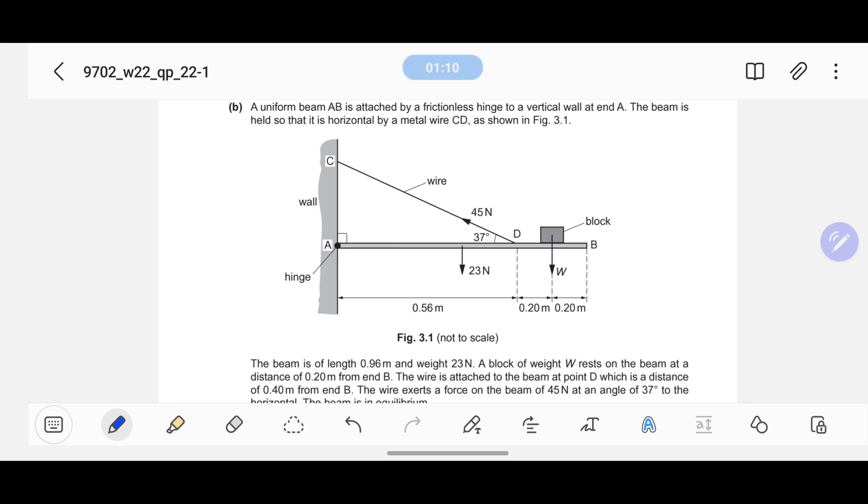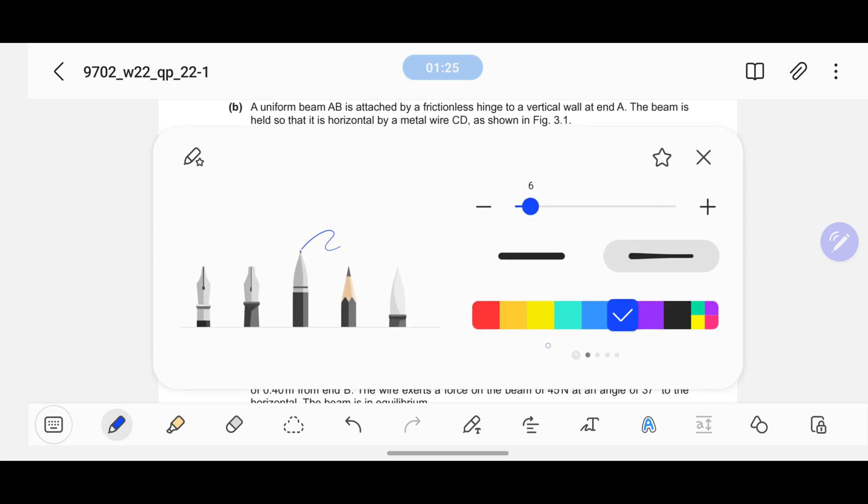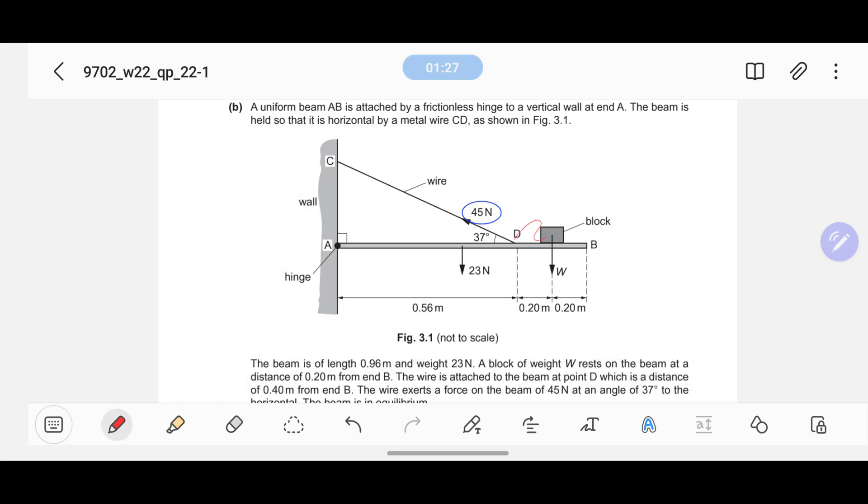There is only one force that is not vertical or horizontal - that is the wire, and it is going diagonal. This wire has a force of 45 Newton acting in a diagonal form, so we'll make two components of this force. One will act perpendicular to the rod and one will act parallel to the rod. The perpendicular one would have the formula 45 sin 37, and the horizontal one will have the formula 45 cos 37.